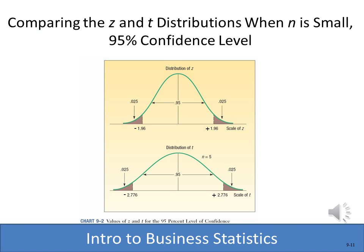Here's a quick comparison of the z versus t distributions. The t distribution is a little wider and more spread out, with more information in the tails. For a 95% confidence level, the t-score will be higher than the z-score. For example, 1.96 is the z-score for 95% confidence, but the equivalent t-score — because the distribution is flatter — would be 2.776. T-scores will generally be a little larger than z-scores.